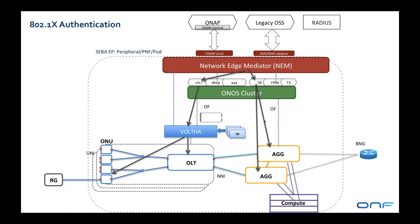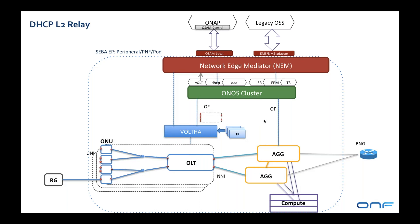Once the VLANs have been provisioned through the system up to the BNG, the final step is for the residential gateway to use DHCP to retrieve an IP address. The RG sends DHCP messages, which are sent to the OLT, trapped there, sent up to Volta, and make their way up to ONOS as a packet-in to the DHCP relay application. We're running layer 2 DHCP relay, so the DHCP relay inserts Option 82 information into the DHCP message and sends it back down to Volta with a packet-out message, telling it to send the message out the OLT's NNI port through the aggregation and up to the BNG.